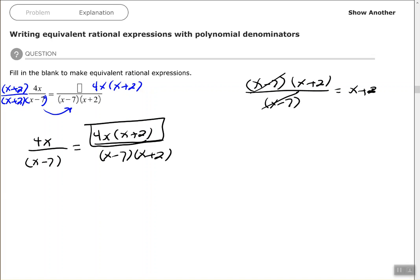We were just trying to figure out what did I multiply x minus 7 by to get to that new denominator. Whatever I multiply by to get to the new denominator, I have to multiply my original numerator by the exact same factor or factors. That's all there is to that.